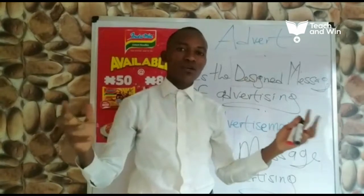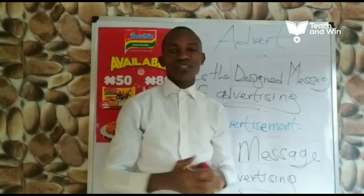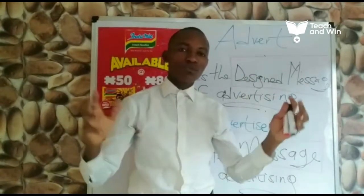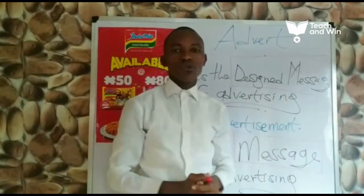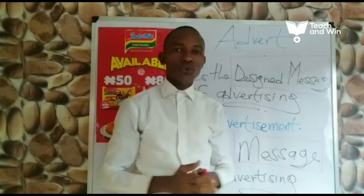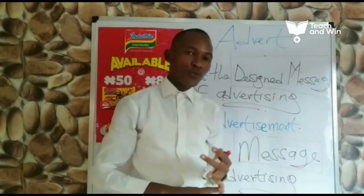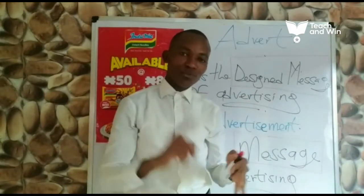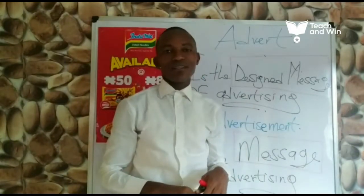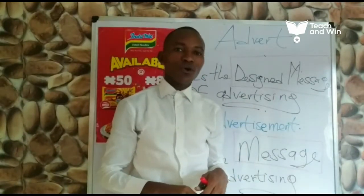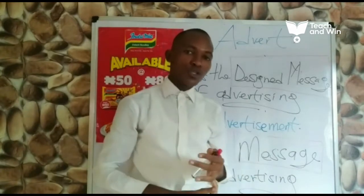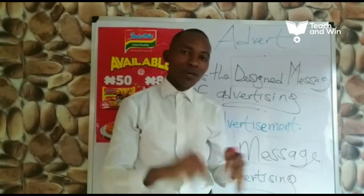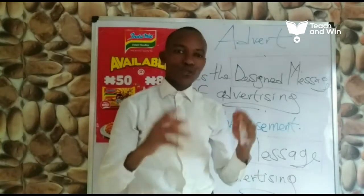In our second and third videos we learned the eight P's of advertising. These eight P's are grouped into two: the first group covers people, product, place, and process; the second group covers promotion, period, prize, and plan.